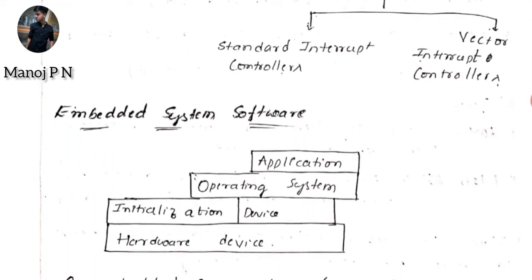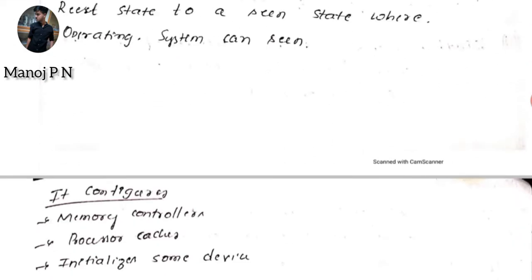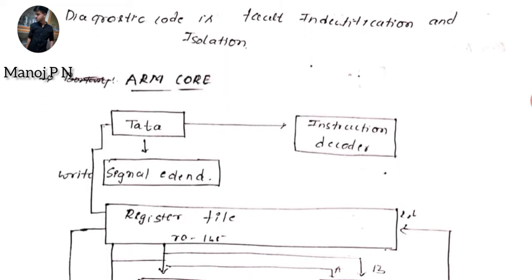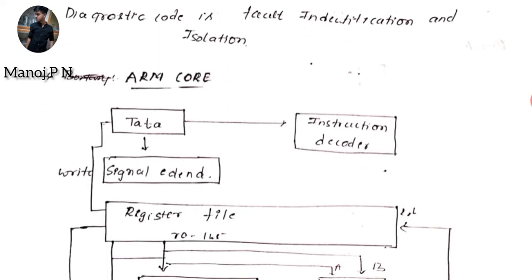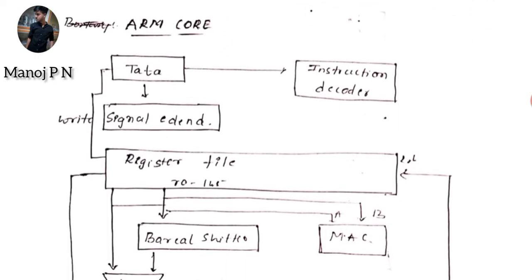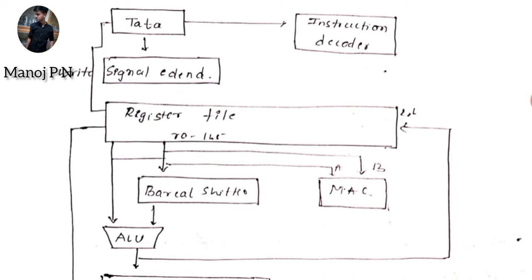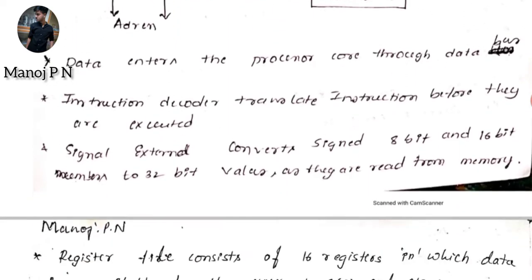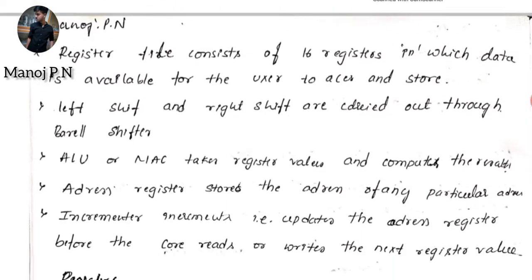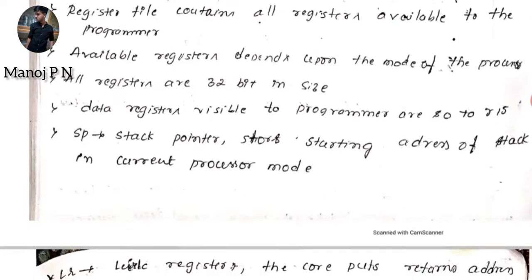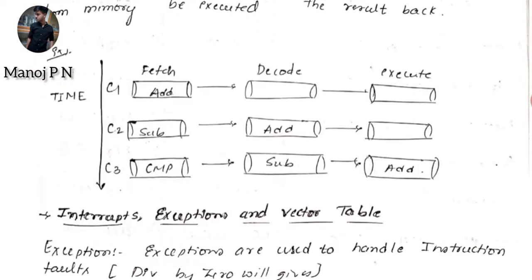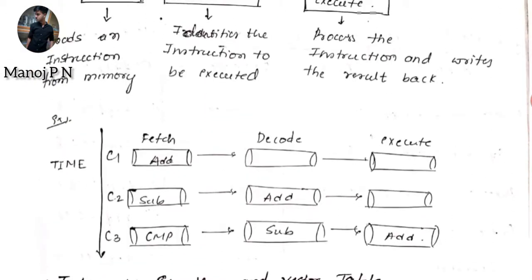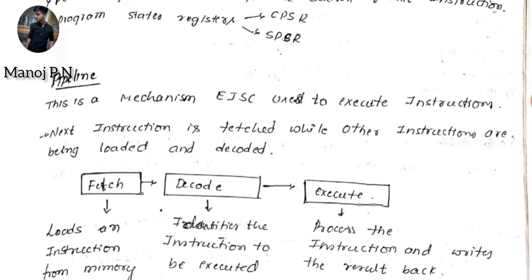We have peripherals, embedded system software, and the ARM core — which has appeared in exams more than two or three times after 2018, so do learn this. We also have processor modes and pipelining. We studied pipeline in a previous module, and this will be a continuation of that, so do learn this.